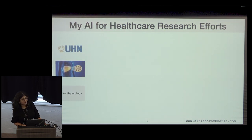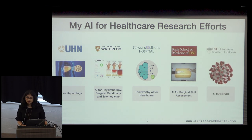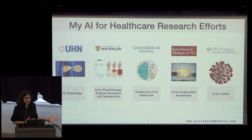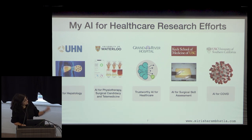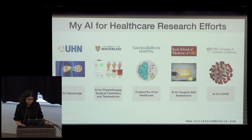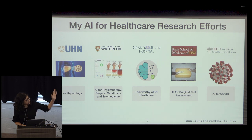I also work on AI for healthcare, where trust becomes extremely important. When talking to domain experts, surgeons, and clinicians, the key question is: how do I communicate that my model has very good performance and that they should use it? I work with University Health Network on liver transplantation, on burn surgical disease, and with Grand River Hospital on trustworthy AI for healthcare. In the past, I've worked on surgical skill assessment for surgeons at USC, and on AI for COVID threats.